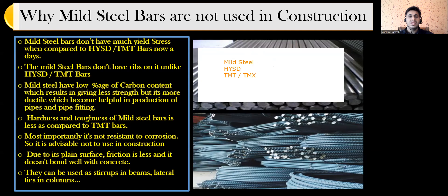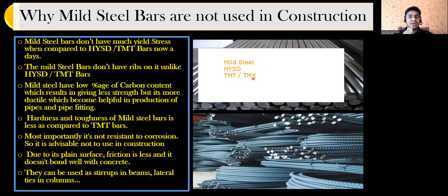The first reason is that mild steel bars don't have much yield stress compared to HYSD or TMT bars. With mild steel we could only get up to Fe 250. Beyond Fe 250, mild steel was not available. Then we moved to Fe 415, 500, 550, and today even Fe 600 — all possible because of HYSD and TMT rebars.